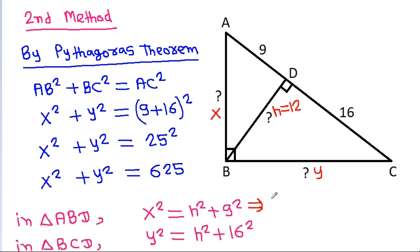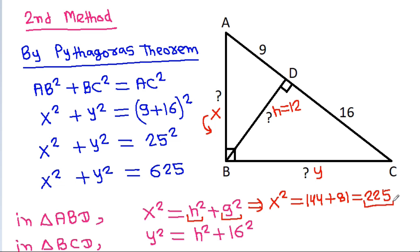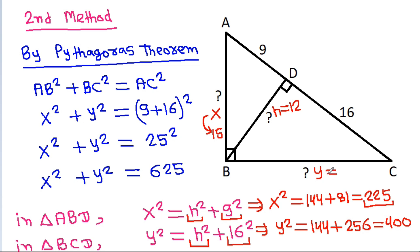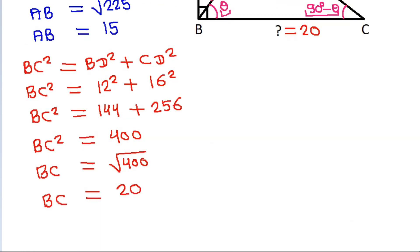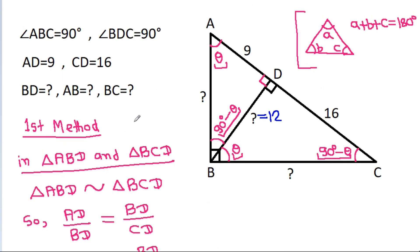From here, x squared equals 12 squared plus 9 squared, which is 144 plus 81, that is 225. So x equals the square root of 225, which is 15. And y squared equals 144 plus 16 squared, which is 256, that is 400. So y equals the square root of 400, which is 20. Therefore BD is 12, AB is 15, and BC is 20.